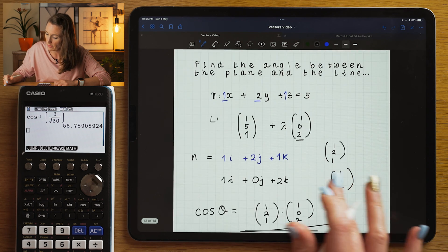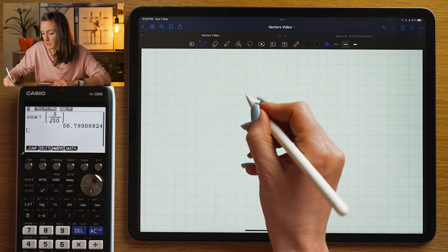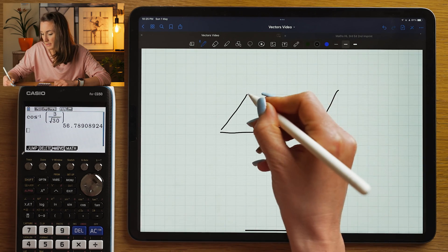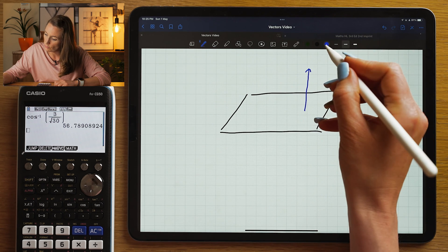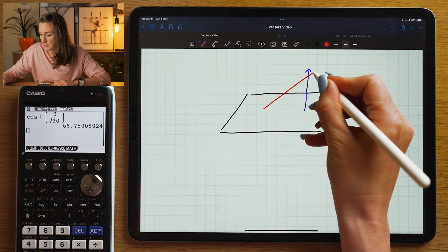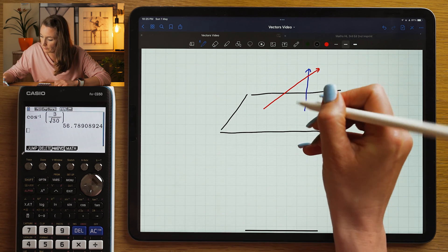But don't forget that as we saw in 3 dimensions, what that means is that is the angle between the normal and the direction vector. That's that angle here.